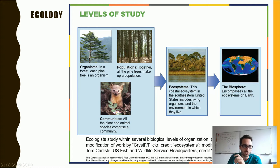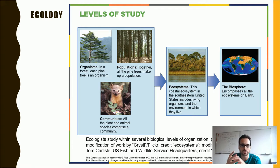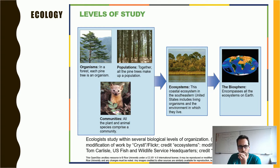If you consider some communities together, you form an ecosystem. For example, a coastal ecosystem in the south of the United States includes living organisms and the environment in which they live — it is something bigger, formed by different kinds of communities. And if you take into account all of the ecosystems we have on Earth, this is called the biosphere.